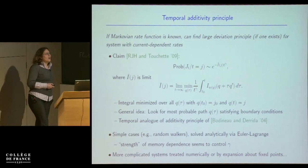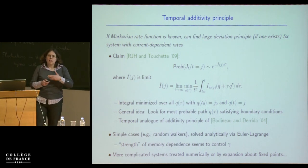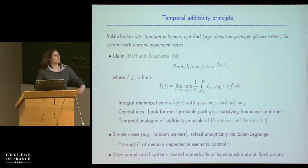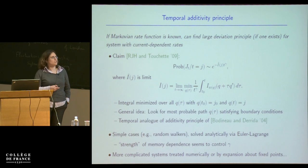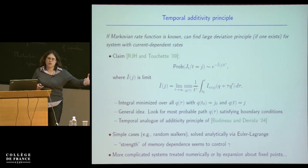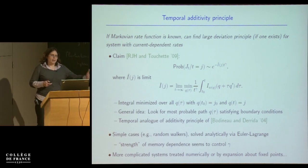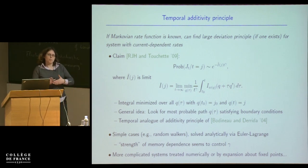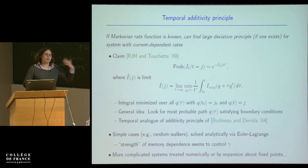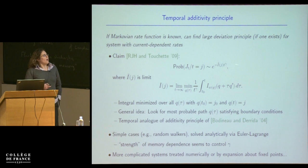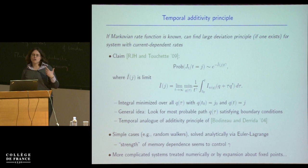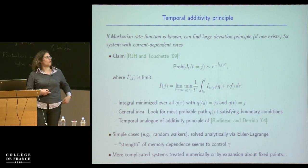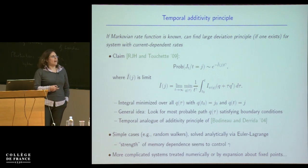This looks pretty ugly, but essentially it comes from an argument where you say: in the long-time limit the time-average current changes very slowly. So you can look at periods of time where the time-average current is almost constant, apply the Markovian rate function for those time slices with an argument which is the current flowing in those slices, then put the time slices together. It's a kind of adiabatic quasi-static argument. You take the limit where both the length of the slices and the number of slices goes to infinity — a slightly complicated limit — and you get this integral form. The general idea is that you're looking for the most probable path in current space: the most probable way in which the current depends on time over the history of your process, which gives you the desired final current.